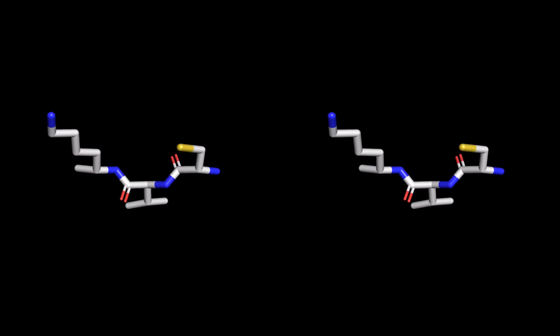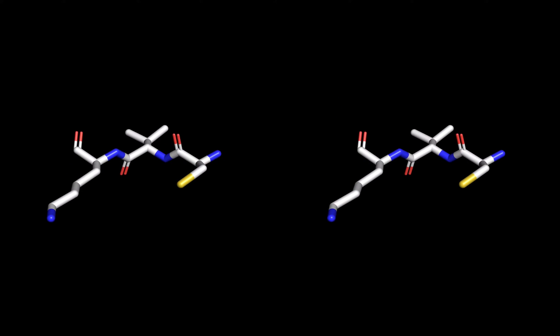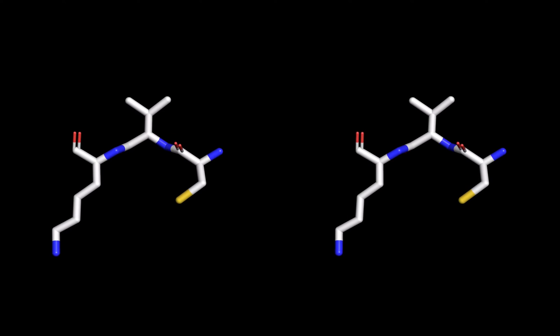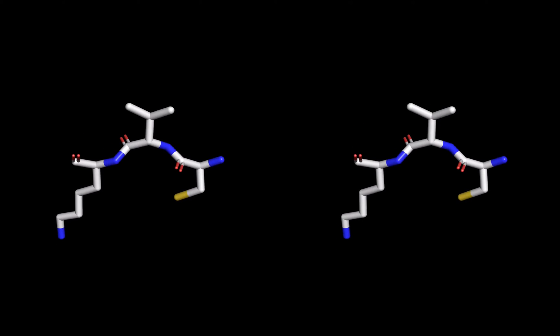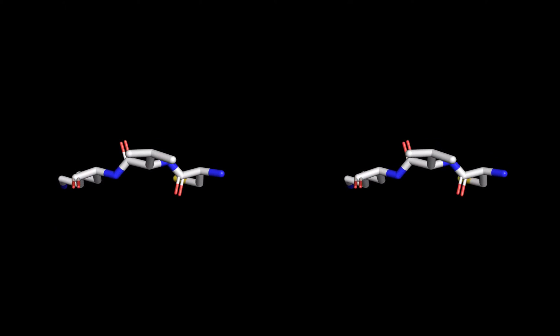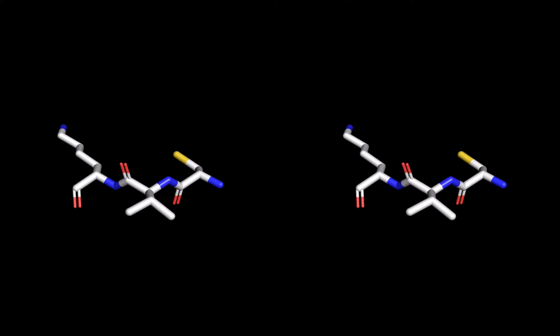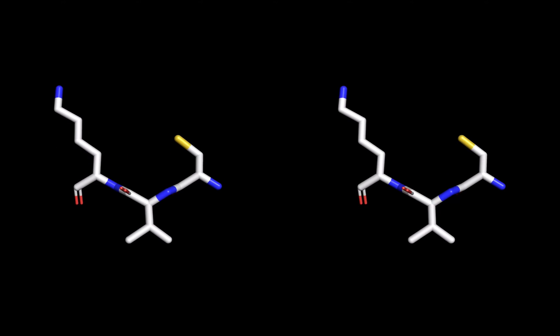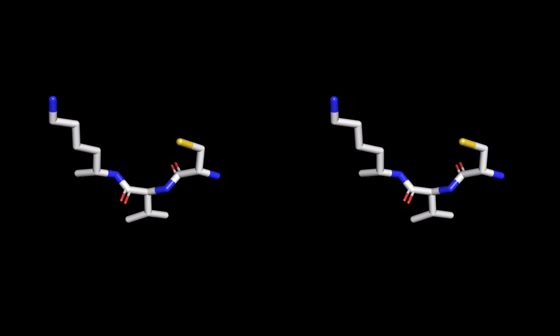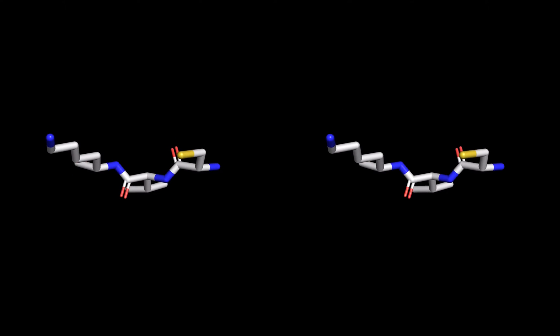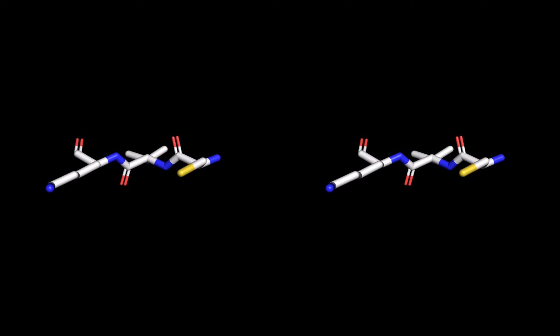Remember, individual amino acids link up in long chains to create the secondary structure of a protein. Here, we're looking at a tripeptide made up of cysteine, valine, and lysine. Notice the nitrogen is next to a carbonyl now. We get an amide or peptide bond when the amino acids link up.